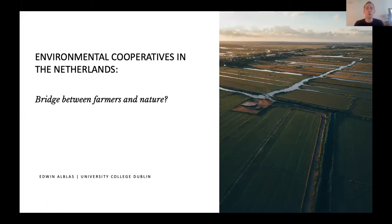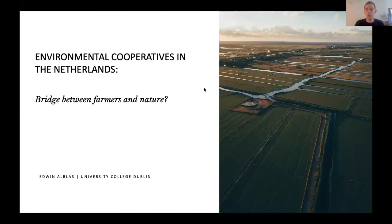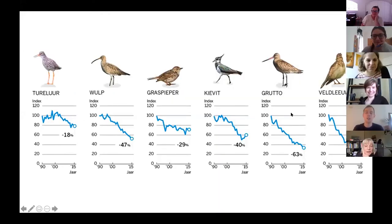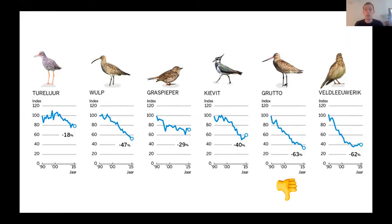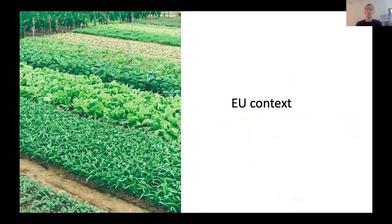I'm very excited to present my research on environmental cooperatives. As an icebreaker: the bird shown was a godwit. This bird and many other species are doing very poorly, mainly as a result of intensified agriculture. Looking at the EU context, the EU has very ambitious laws and strong rules, but only a tiny bit of its agricultural budget goes towards promoting sustainable farming practices, and even then it's not very effective.